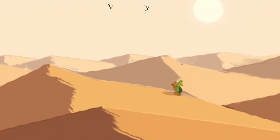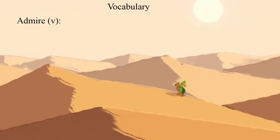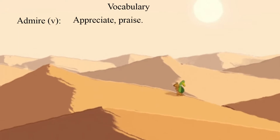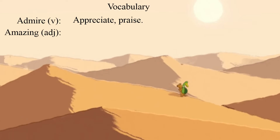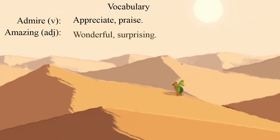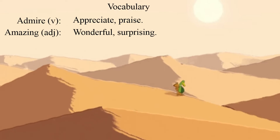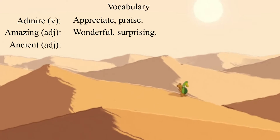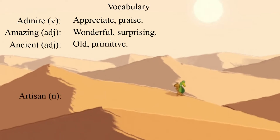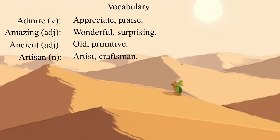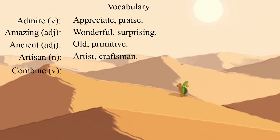Now it's time to read the vocabulary. The first one is 'admire' — it's a verb. Next is an adjective meaning wonderful or surprising. Then 'ancient' — it's also an adjective meaning old or primitive. 'Artisan' is a noun meaning artist or craftsman. 'Combine' is a verb meaning connect.